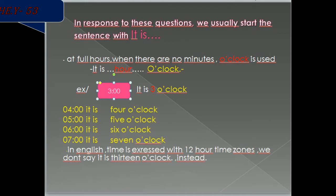For more examples, it is 4 o'clock, it is 5 o'clock, it is 6 o'clock, it is 7 o'clock. In English, time is expressed with 12-hour time zones. We don't say it is 13 o'clock instead.